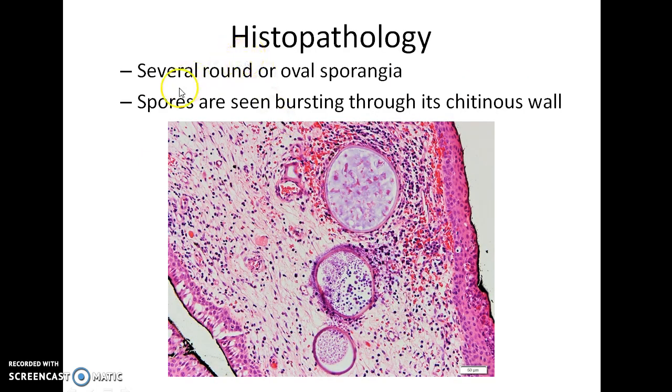On histopathology, several round or oval sporangia are seen. Spores are seen bursting through the chitinous wall. This is a classic slide of Rhinosporidiosis.